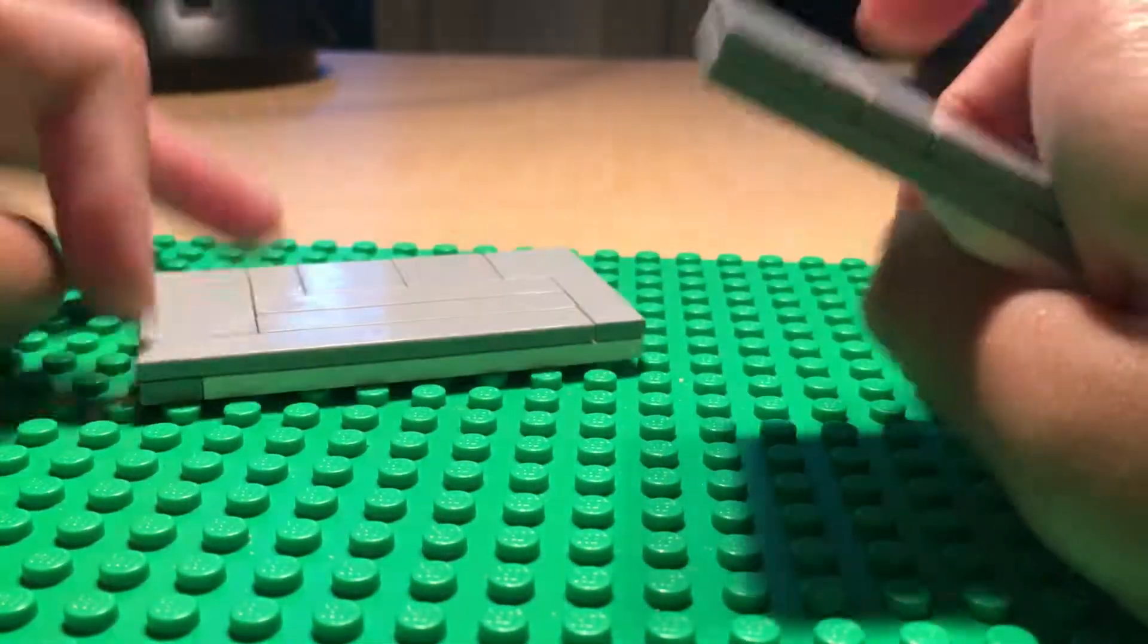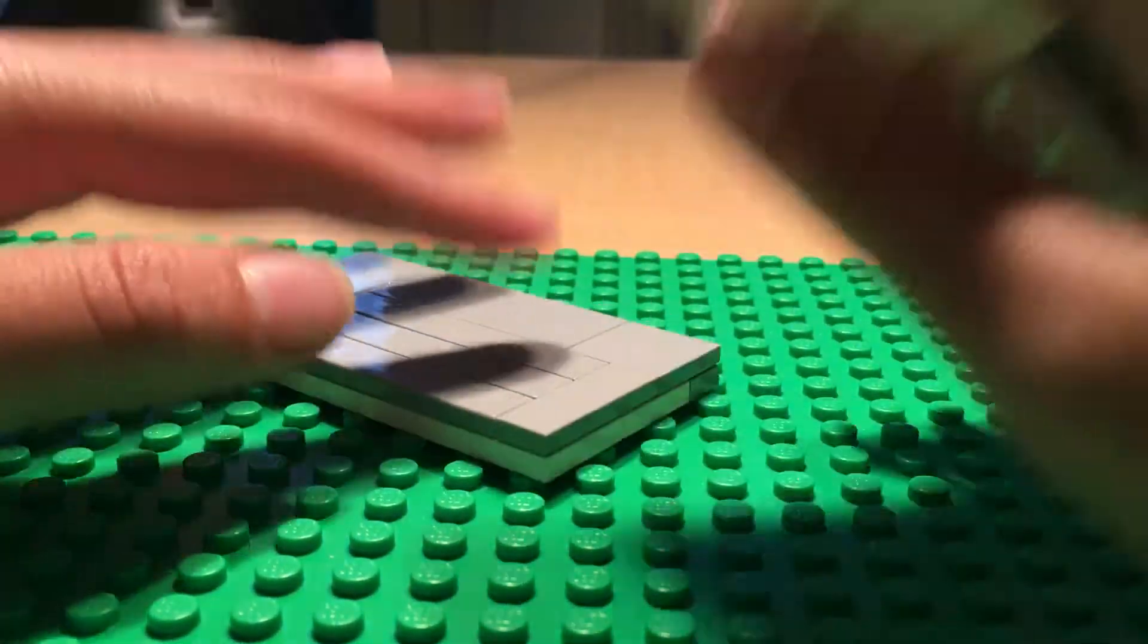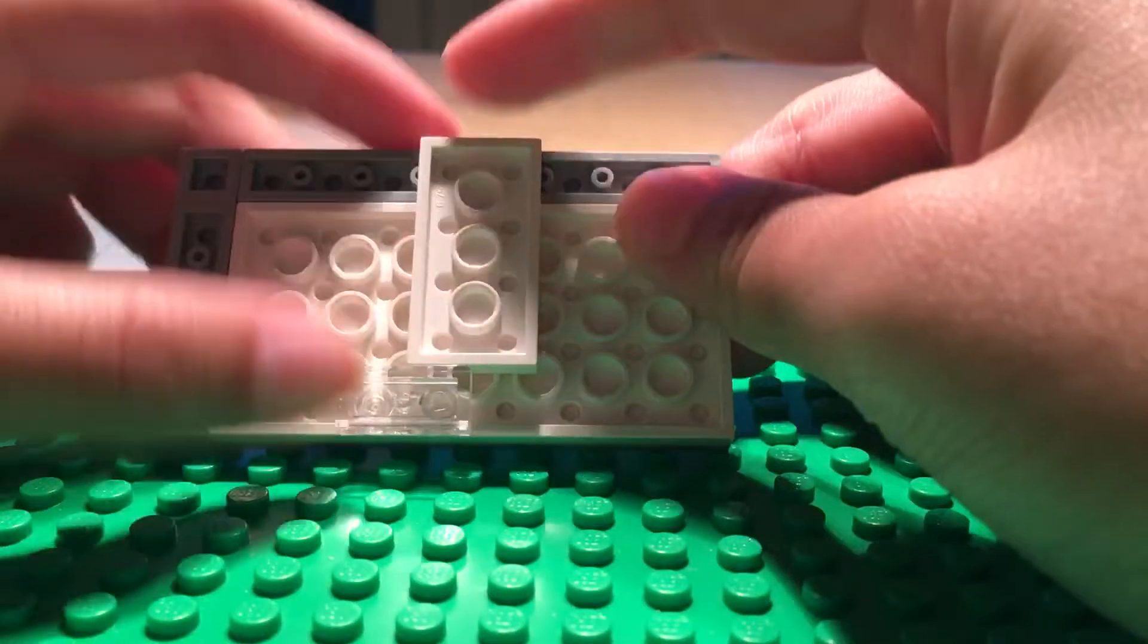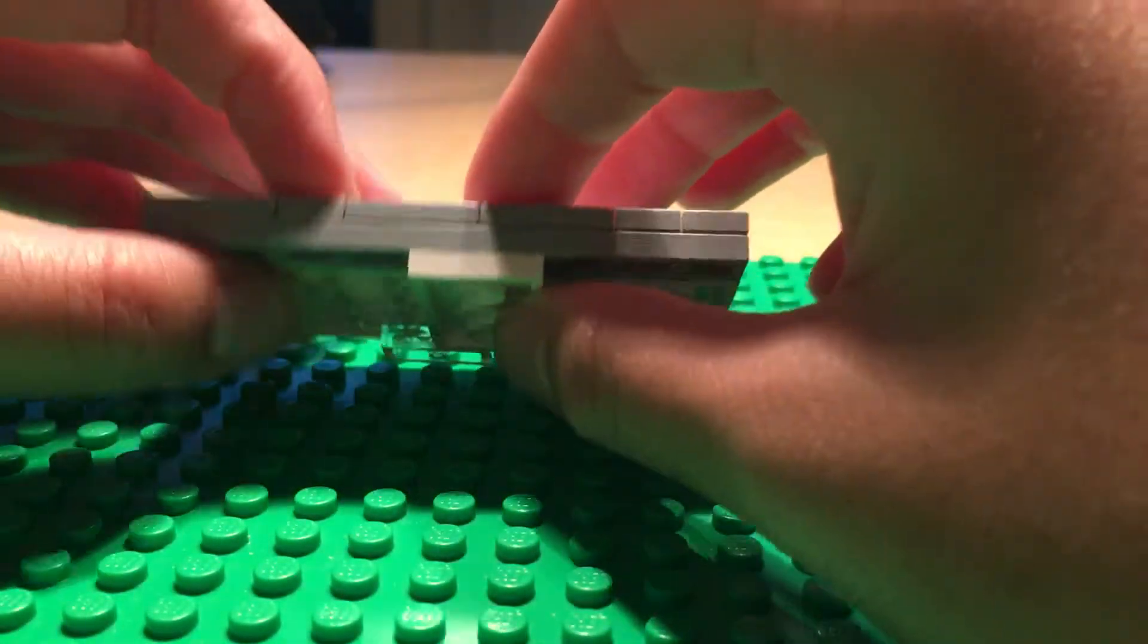Make another one of those and on either one, it doesn't matter. Two by four, one by two. It doesn't have to be clear, it just looks cooler.